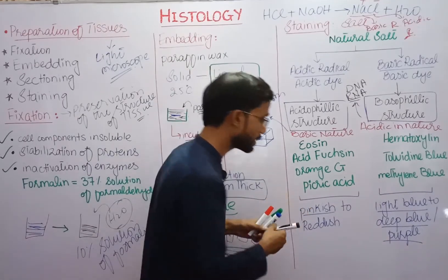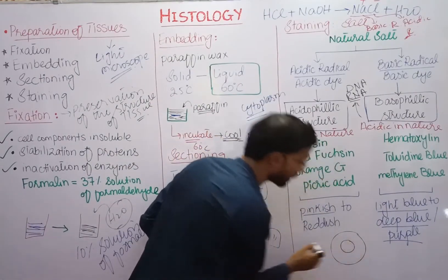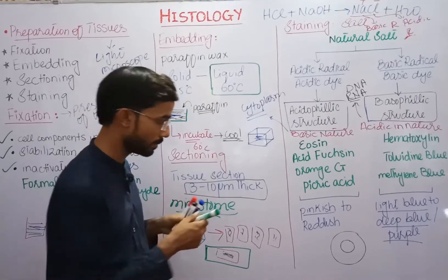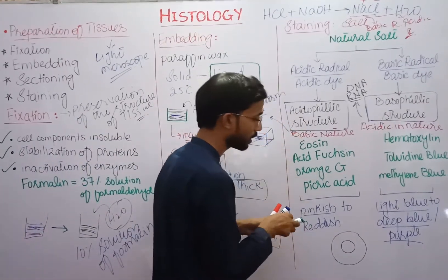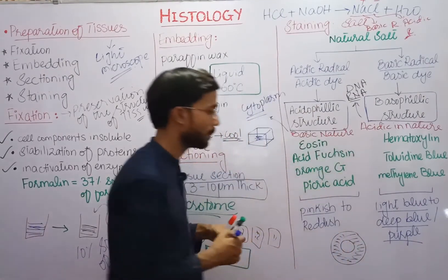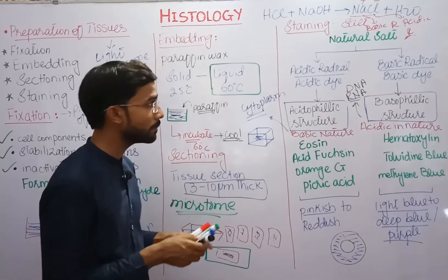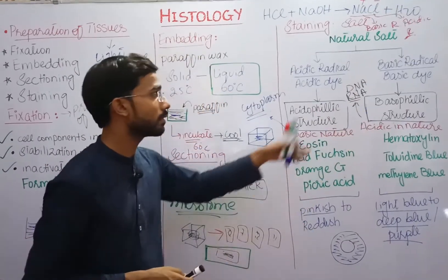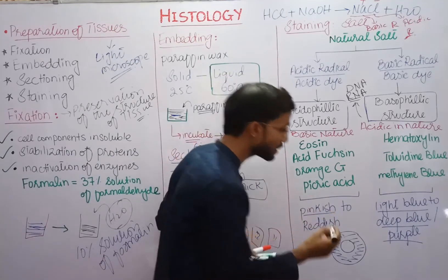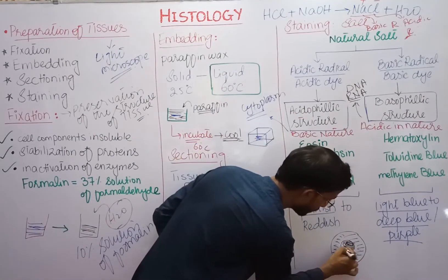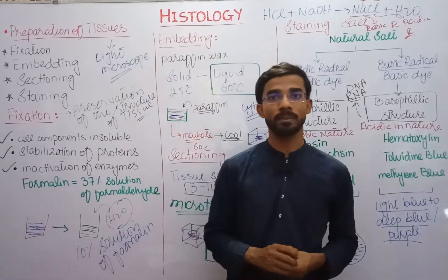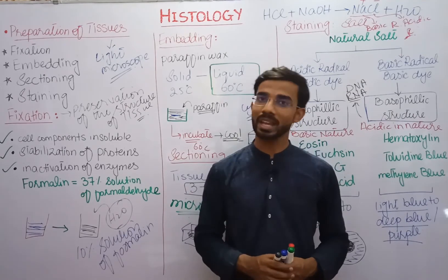For example, here is a cell having a nucleus in it. The acidic dye colors the cytoplasm in a pinkish to reddish color. The basic dye stains the DNA or RNA — which is mainly present in the nucleus — so the nucleus will appear deep purple in color. This is all about preparation of tissues for examination through the microscope. Thank you so much.